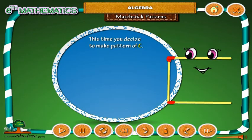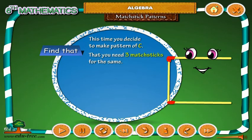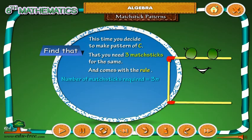This time you decide to make a pattern of C. Find that you need 3 matchsticks for the same. And come up with the rule: number of matchsticks required equals 3N.